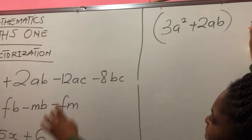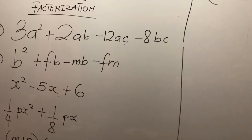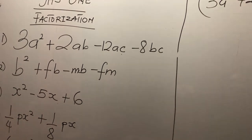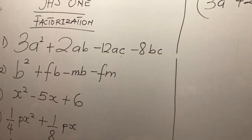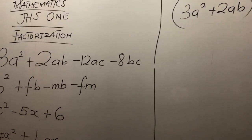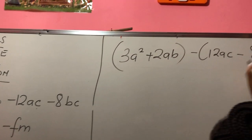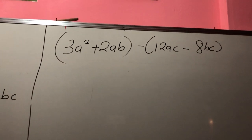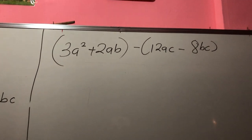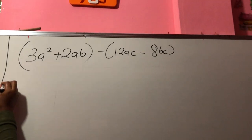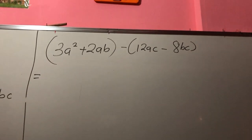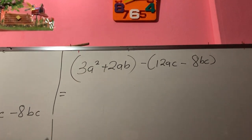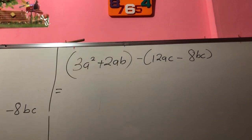Then I have my — what is the operation sign here? It's a minus. So I have my 12AC and my minus 8BC. This is the first grouping. Now, the second step in factorization: you look for a number that is a factor to each of the numbers in the bracket.